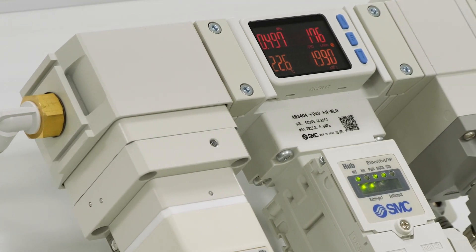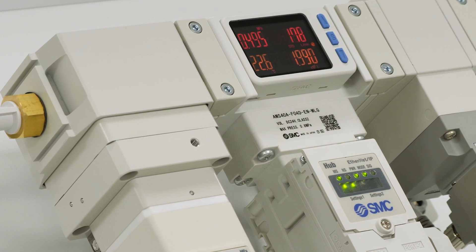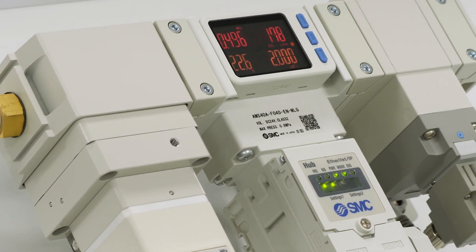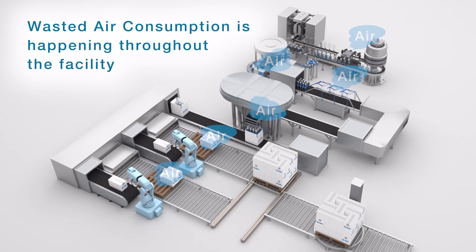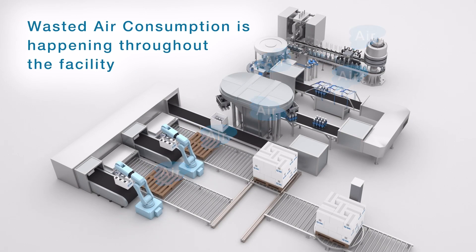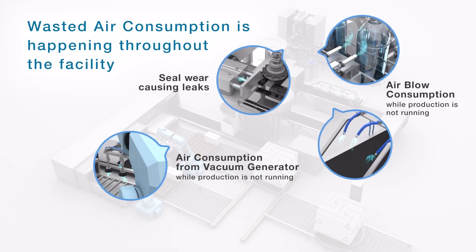For example when your machine has stopped production during break time, over the weekend, during a shift, tool or parts change. You could still be consuming air from air purge equipment, worn seals and leaking pipe connections.